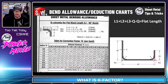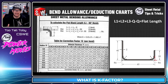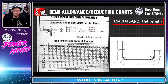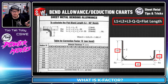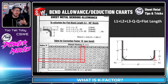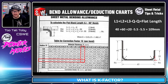What we used to do in sheet metal is use charts called bend allowance or bend deduction charts. The formula here in the upper right says L1 plus L2 plus L3 minus Q minus Q gives us the flat length to cut the material to. In the case of this model, L1, L2, and L3 are 40, 60, and 20. Q is determined by the chart — looking at wall thickness of 2 millimeters and default bend radius of 6 millimeters — giving a Q value of 5.5. So 40 plus 60 plus 20 minus 5.5 minus 5.5 gives us a flat length of 109 millimeters.